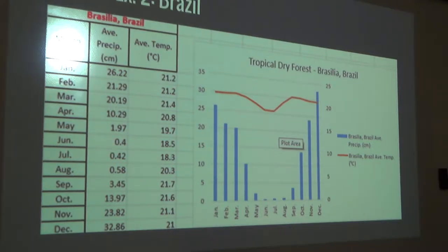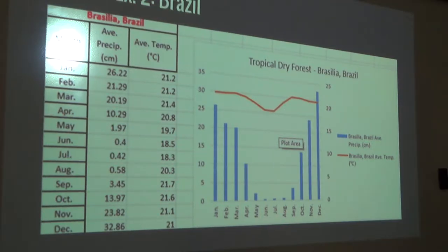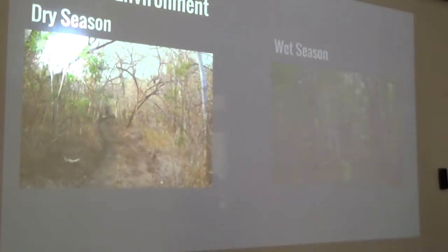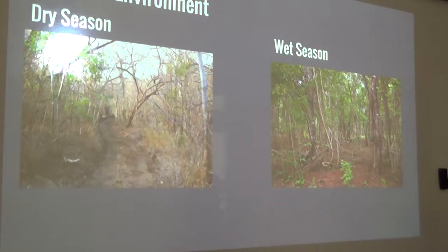Rainfall increases around April and May and drops again around October and November, showing the beginning and end of the wet season. Brazil is in the southern hemisphere, so the May to November wet season doesn't apply there. Precipitation picks up significantly around November and continues until about March and April, which is the wet season in the southern hemisphere.